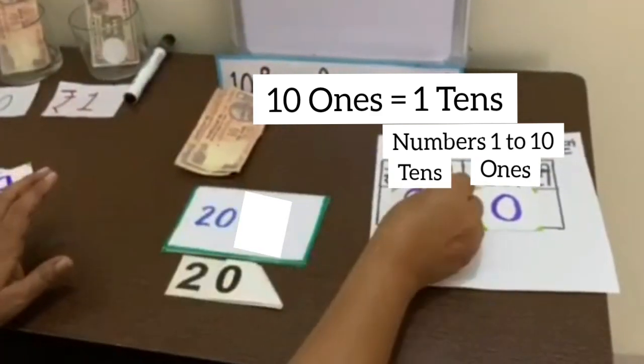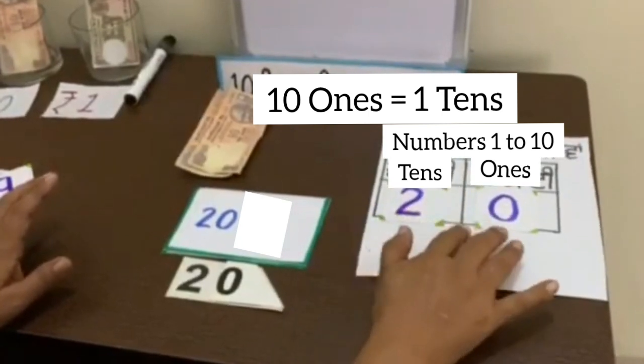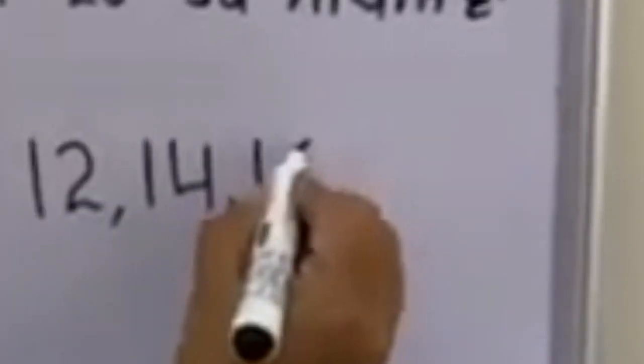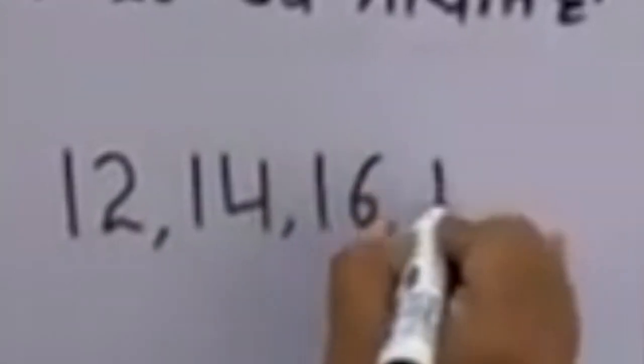So now for your homework 12, 14, 16, 18. These numbers you will make with help of currency notes. You can also make currency notes with help of paper. Thank you.